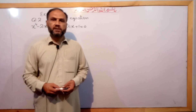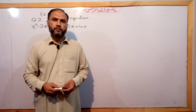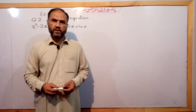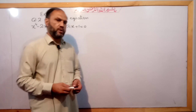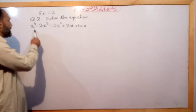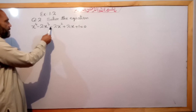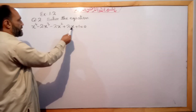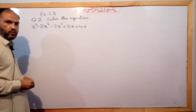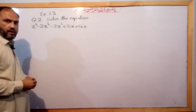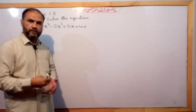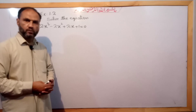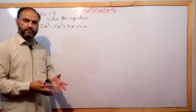Bismillahirrahmanirrahim. Now I am going to lecture in the 10th class of maths. I am going to solve Exercise 1.2, question number 2. Question number 2 is x⁴ minus 2x³ minus 2x² plus 2x plus 1 equal to 0. This is a bi-quadratic equation, and I am going to convert it to standard quadratic form.